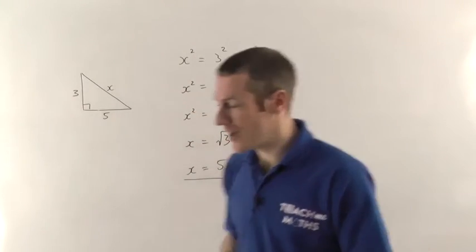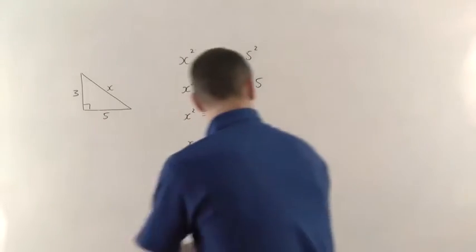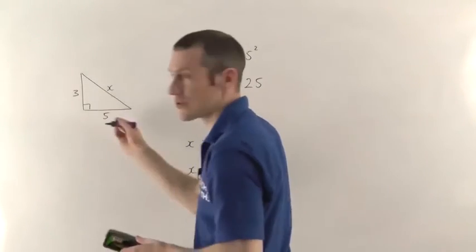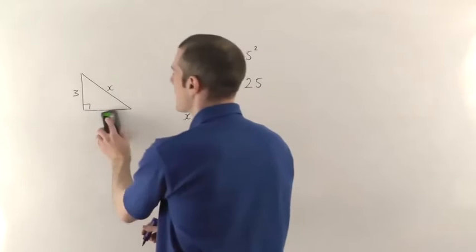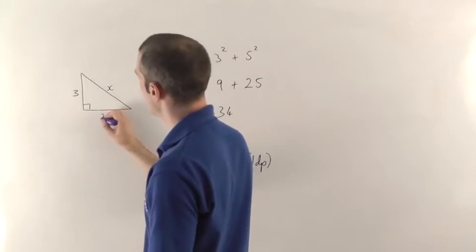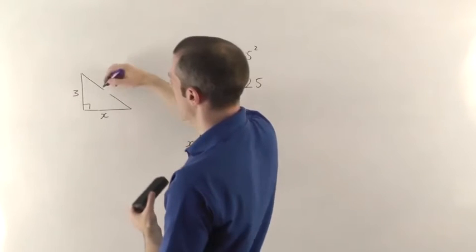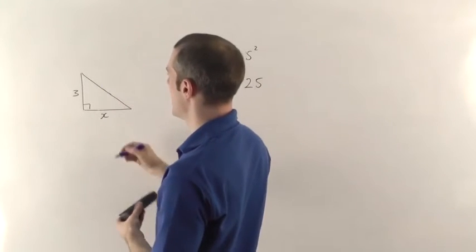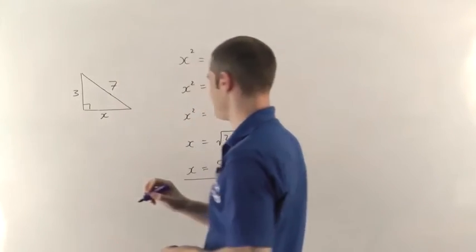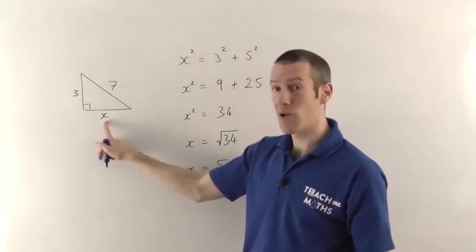Now that's all very well if they've given you the lengths on the two shorter sides, but what if they haven't? What if you're trying to find out the length of that side, or keep this one as 3, and they tell you that the length of this side now is 7.